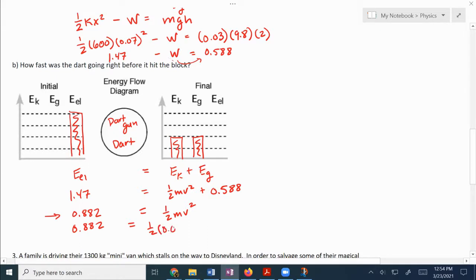So to finish solving that we're going to, 0.882 divided by one half times by 0.03. I'm going to make sure I use parentheses on that, but that's going to give me 58.8 equals V squared, square root both sides. I'm going to get that V is equal to 7.67. So 7.67 meters per second. So there we go.